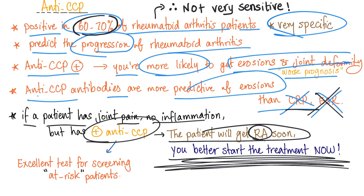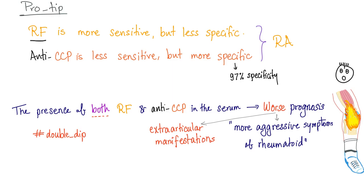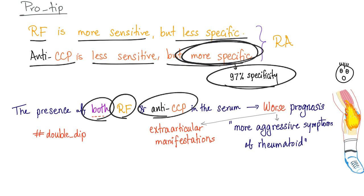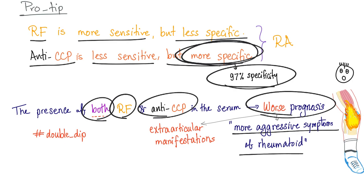Anti-CCP is an excellent test for screening at-risk patients — those who are at risk of developing rheumatoid arthritis. Pro tips: rheumatoid factor is more sensitive but less specific; anti-CCP is the exact opposite — less sensitive but very specific for rheumatoid arthritis. The presence of both rheumatoid factor and anti-CCP in the serum carries a worse prognosis, and you will have more aggressive symptoms of rheumatoid arthritis.